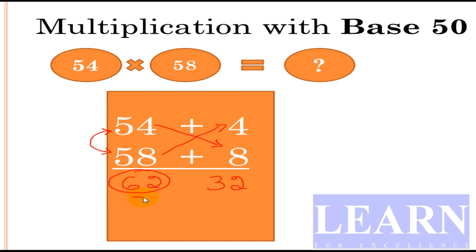What is half of 62? Half of 62 is 31. So what is the final result? Final result is 3132. No addition, nothing. Direct write the answer as 3132.